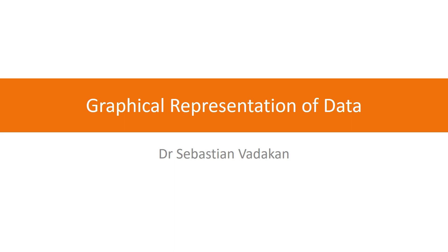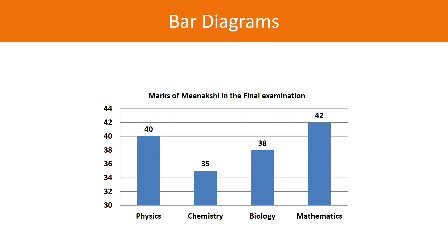As students of biosciences, you will be generating a lot of data. Today we will learn how to represent this data graphically. Let us begin understanding bar diagrams with an example of a student named Meenakshi. The marks Meenakshi obtained in the final examination are: Physics 40, Chemistry 35, Biology 38, and Mathematics 42.